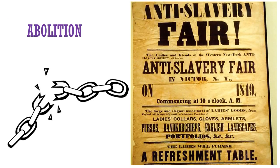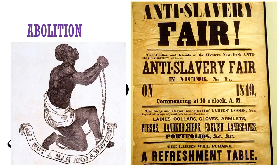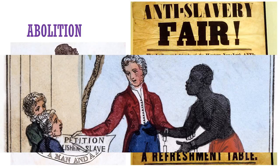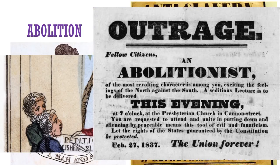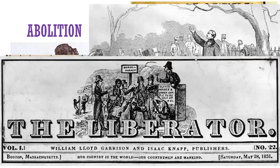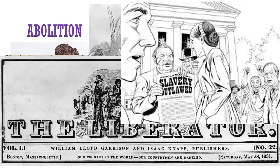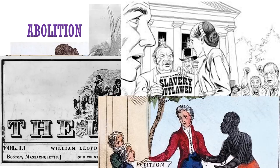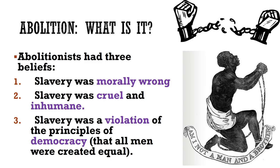Not all people in the United States believed that slavery was right. In fact, many people believed that it was wrong and that it should end in the United States. These people were called abolitionists, and the movement to get rid of slavery was called abolition. Some abolitionists were brave and spoke out about what they believed. Draw a picture of an abolitionist speaking out about slavery next to your notes. They held meetings, wrote newspapers, and shared ideas to convince others that slavery was wrong and to join their cause. Abolitionists wanted plans to be put in place to remove slavery from our country.